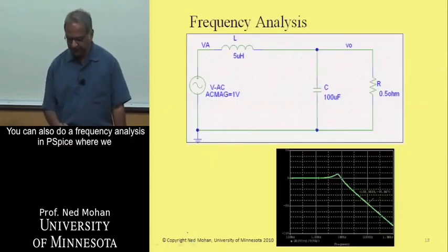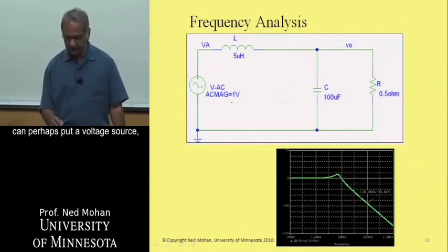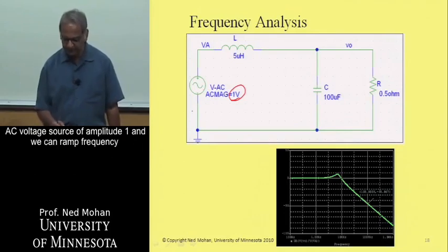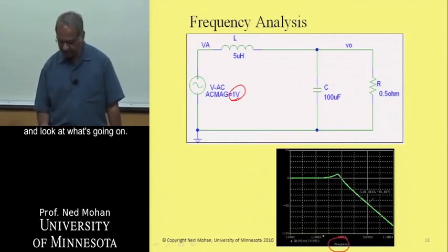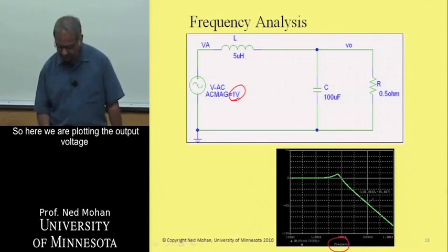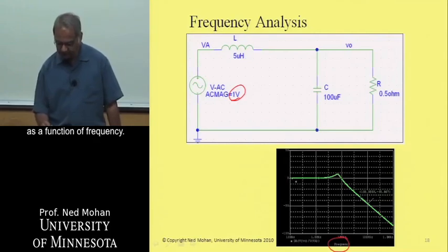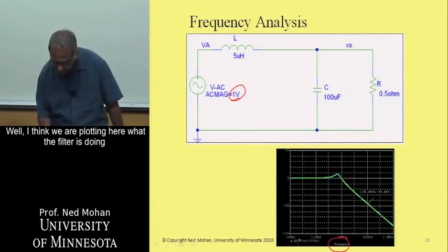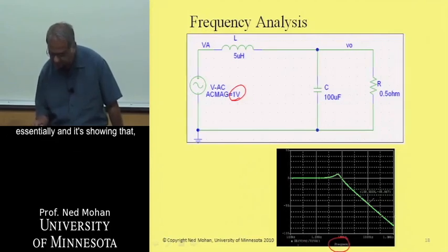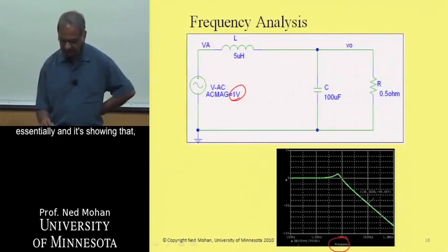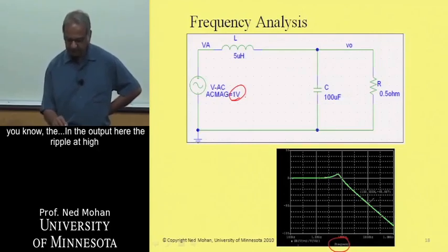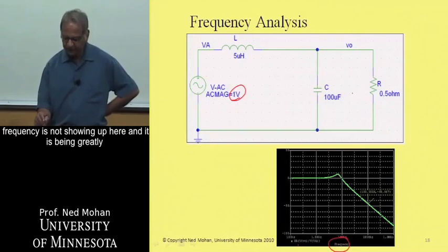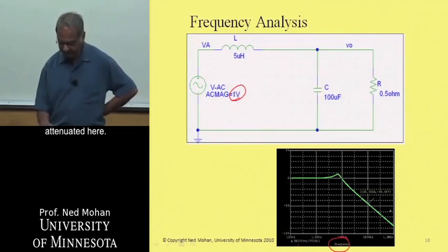A frequency analysis in P-SPICE can be done by injecting an AC voltage source of amplitude one and varying its frequency to observe the circuit response. Plotting the output voltage as a function of frequency shows what the filter is doing — the ripple at high frequencies does not appear at the output and is greatly attenuated.